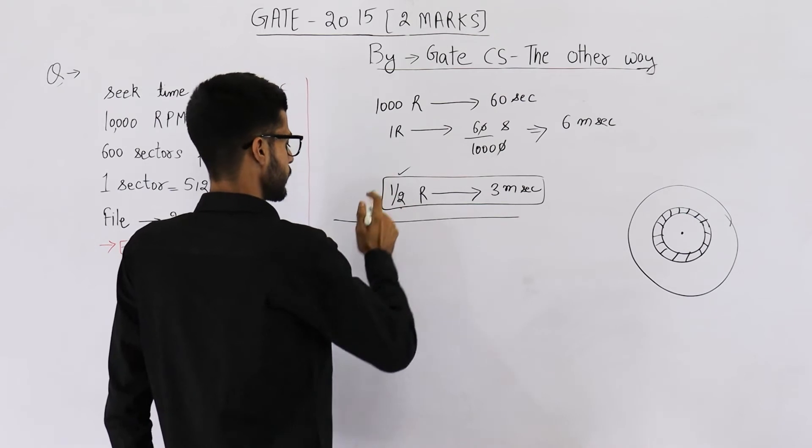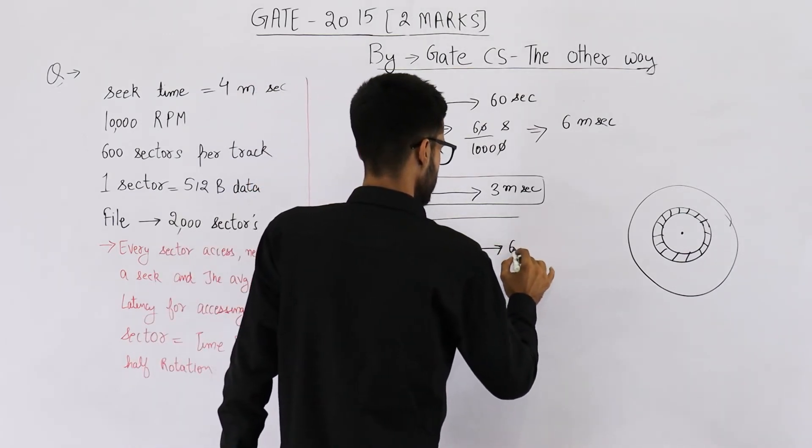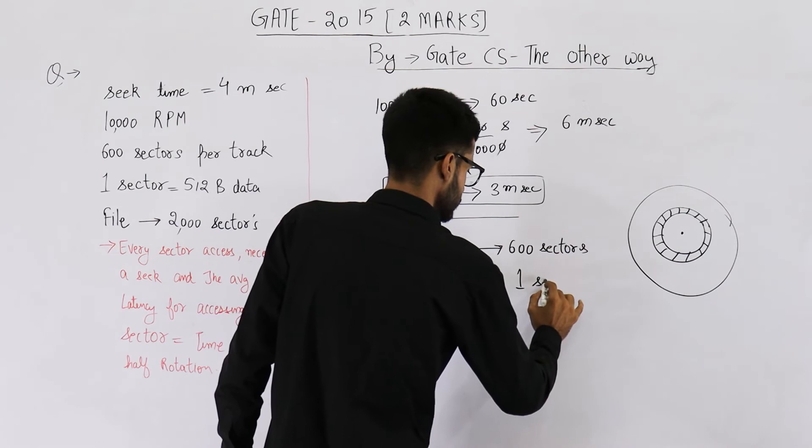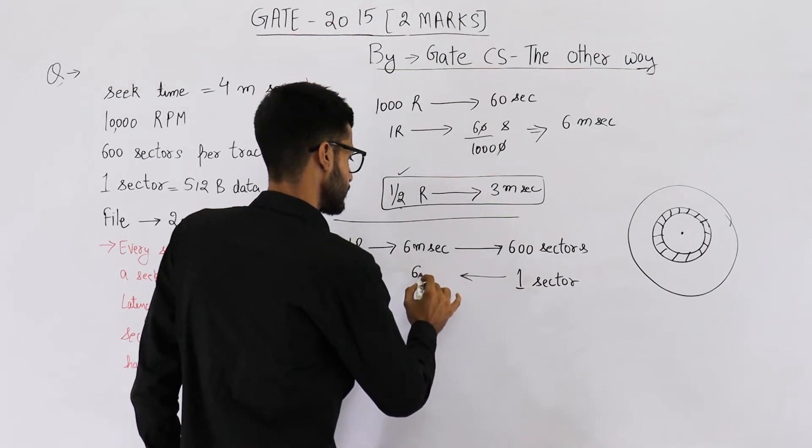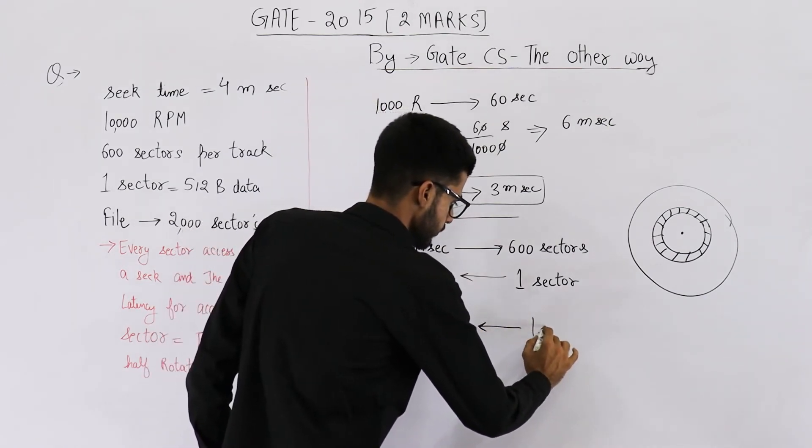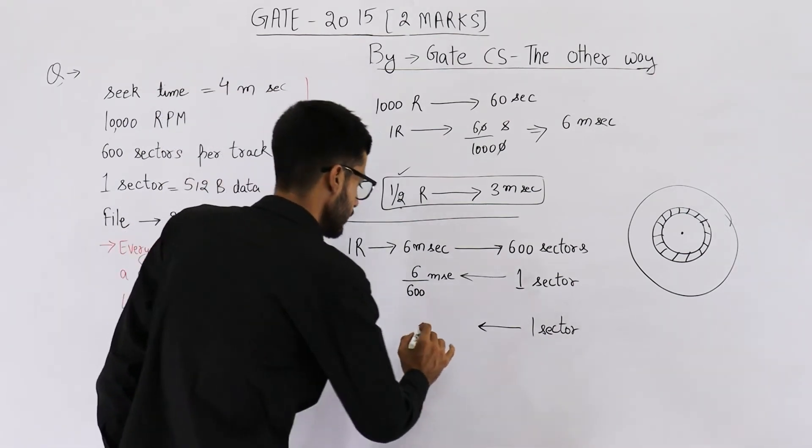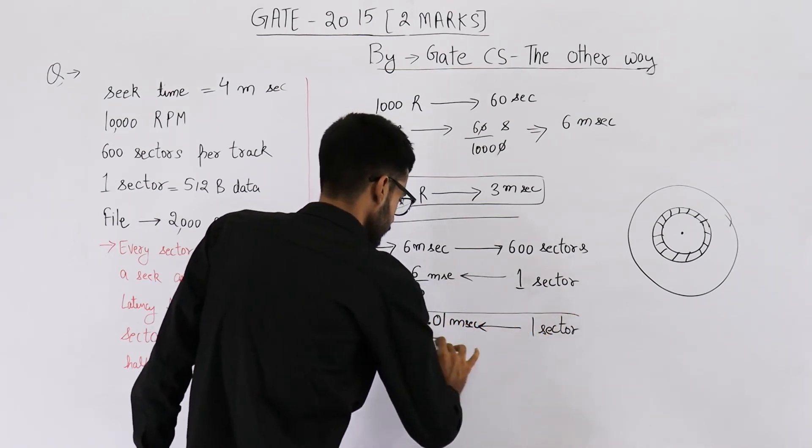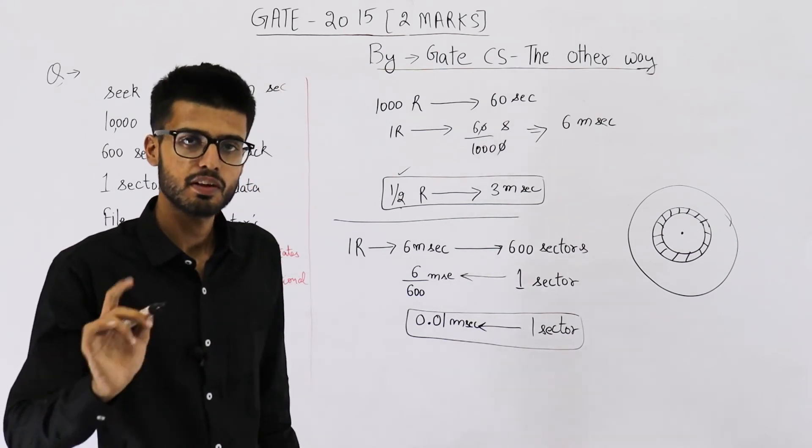Let's write that. In one rotation, that is 6 milliseconds, you could access 600 sectors. So one sector could be accessed in how much time? That will be 6 by 600 milliseconds. That means one sector requires 1 by 100 milliseconds, that will be 0.01 milliseconds.